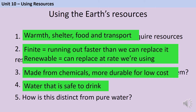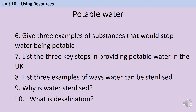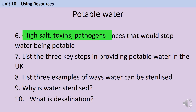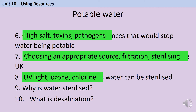Potable water is water that is safe for us to drink and it's distinct from pure water, because pure in chemistry means that there's been nothing else added to it — it's one element or one compound. So potable water can contain other substances, just not dangerous ones. Water might not be potable if it contains high levels of salts, toxins or pathogens. Here in the UK, to make potable water, we find an appropriate source of fresh water, filter it to remove solid objects, and finally sterilise it using UV light, ozone or chlorine gas. The point of sterilising is to kill pathogens.